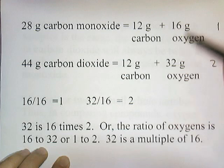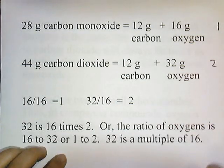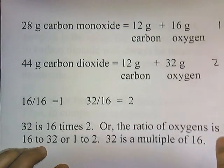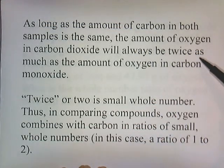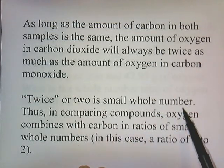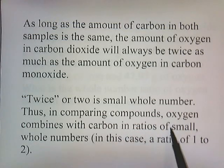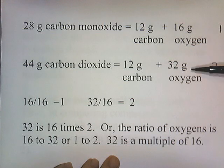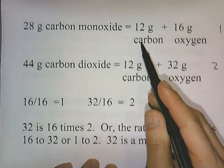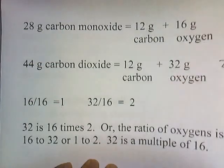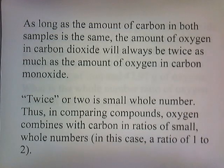32 is a multiple of 16, so the oxygen seems to be combining in whole number ratios. As long as the amount of carbon in both samples is the same, the amount of oxygen in carbon dioxide will always be twice as much as the amount of oxygen in carbon monoxide. Twice — two — is a small whole number. Thus, comparing these compounds, oxygen combines with carbon in ratios of small whole numbers. Whenever you compare two compounds that have the same constituents, the ratio of those constituents is going to be in small whole numbers, while holding another element in a fixed quantity — here, the fixed quantity is 12 grams. I hope that clarifies what the Law of Multiple Proportions means.